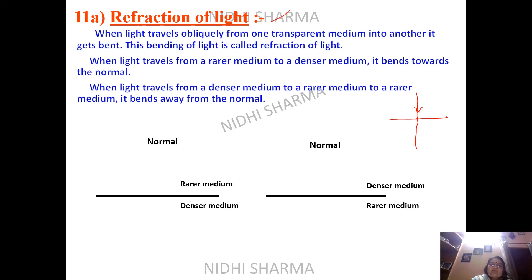We are coming from rarer medium to a denser medium. Rarer medium means optically rarer — it is not mass-related rarer or denser. It is related to optical density. For example, water and colored water have different optical densities. So if a ray is coming obliquely from rarer to denser medium, it will bend towards the normal.